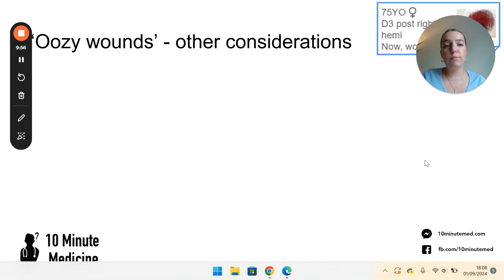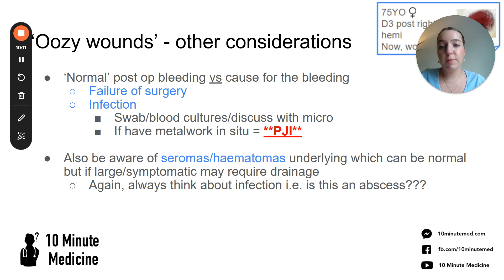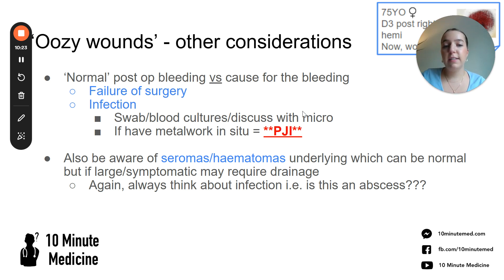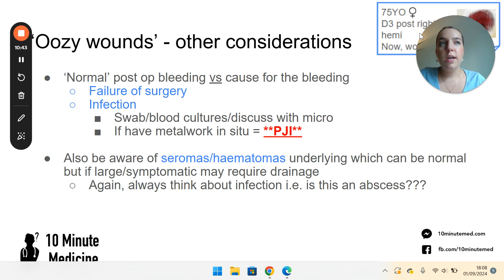Some other considerations for oozy wounds: is this normal post-op bleeding, or is there an underlying cause? I've seen cases where an anastomosis has failed and an artery has been leaking, causing the bleeding. Or could infection be underlying — yellow ooze, failure to heal? Always do micro: swabs, blood cultures, chat to microbiology. Importantly, if a patient has metalwork in there and there's infection, that's effectively a prosthetic joint infection — a very serious infection requiring senior and microbiology involvement. Seromas and haematomas can also form underneath, causing oozy wounds a few days post-op. Most often these resolve on their own, though if very large they may require drainage.